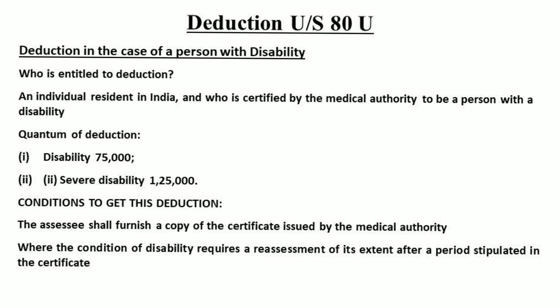To summarize: normally disabled — seventy-five thousand rupees. Severely disabled — one lakh twenty-five thousand rupees.